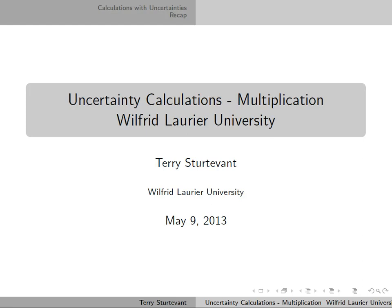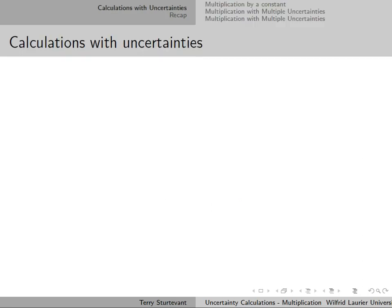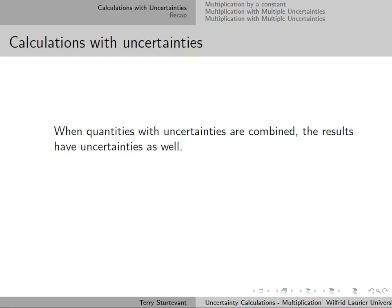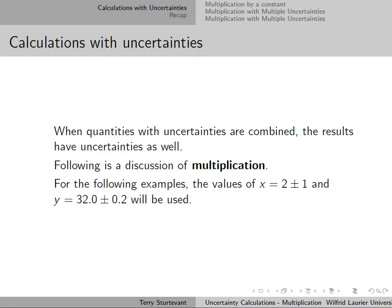This document is about uncertainty calculations, and specifically about multiplication. When quantities with uncertainties are combined, the results also have uncertainties. The examples used will be x equal to 2 plus or minus 1, and y equal to 32 plus or minus 0.2.